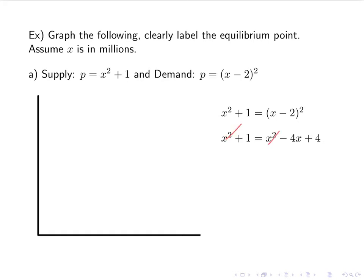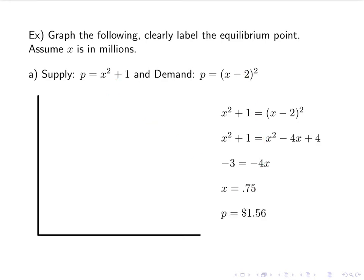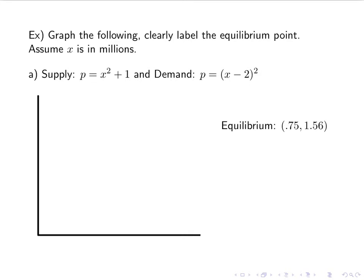Again, the x squareds cancel — it's going to be a line. I subtract my 4 over to this side, giving negative 3 equals negative 4x, so x is 0.75. I'm writing 0.75 instead of 3 fourths because I will be graphing it, but it is exactly 3 fourths — not rounded. Then I plug it into either the supply or the demand to get the price, and you should get $1.50. All I care about is quadrant 1 — no negative prices, no negative quantities.